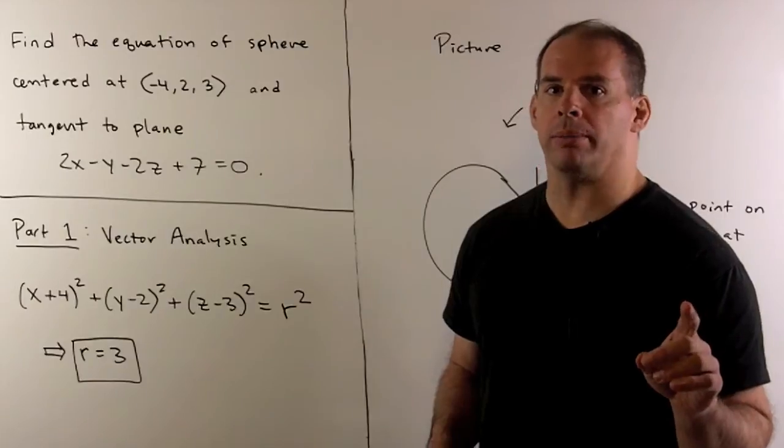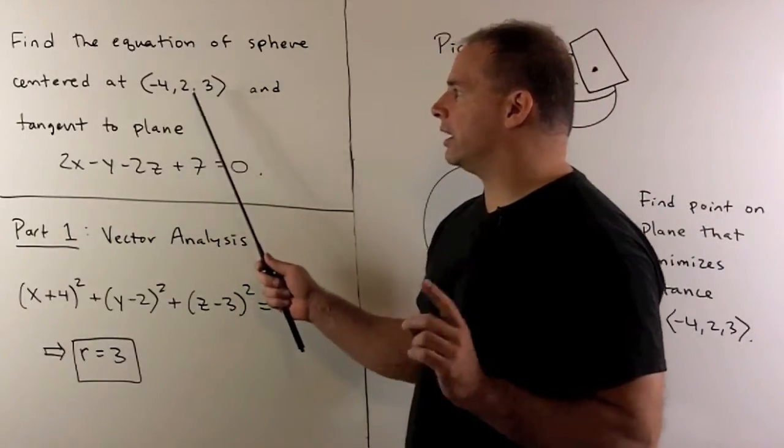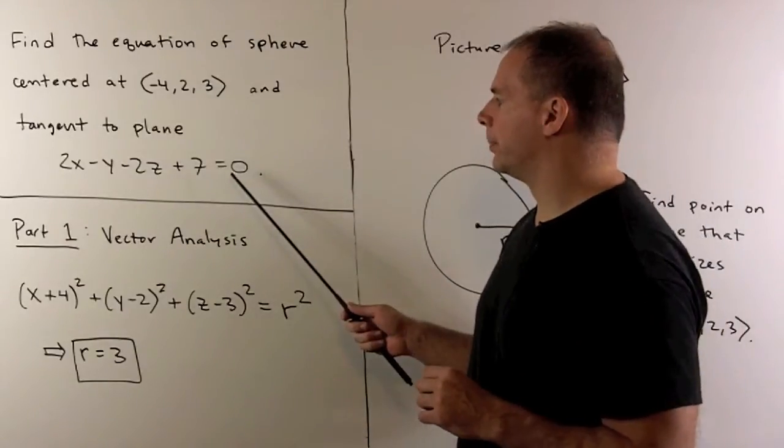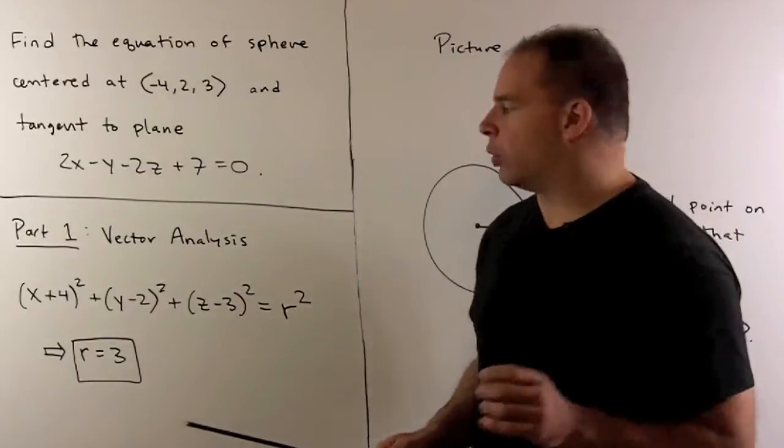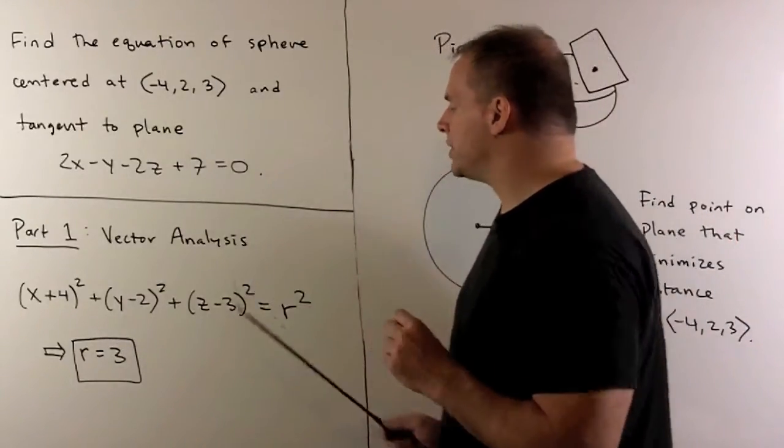Here's a quick recap of part one. We want to find the equation of a sphere centered at a given point tangent to a given plane. First step, we write down the equation of a sphere. We note that we have the center, so we're missing the radius.